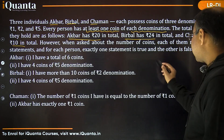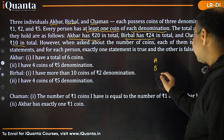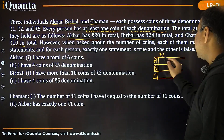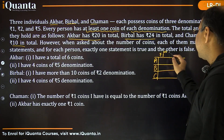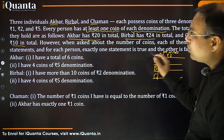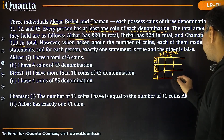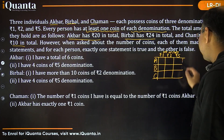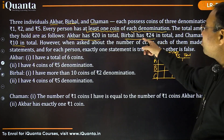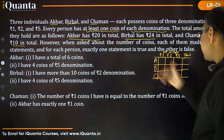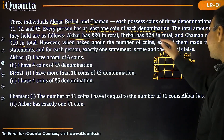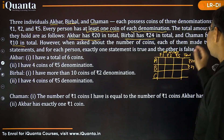So we are having three persons A, B, and C, and three denominations: ₹1, ₹2, and ₹5. We'll write the number of coins of each denomination in a table. The total values given are: A has ₹20, B has ₹24, and C has ₹10.